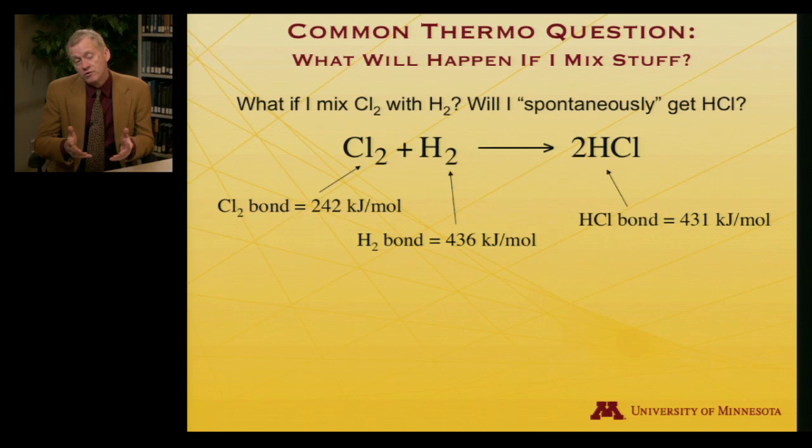And so one way to evaluate that, again using thermochemical concepts, would be to ask a question about bonding. We can determine the energies of bonds in molecules by tearing them apart, looking at how much energy it takes to tear them apart. It turns out that for molecular chlorine, the strength of the chlorine-chlorine bond is 242 kilojoules per mole. And for molecular hydrogen, it's a stronger bond, 436 kilojoules per mole. The hydrogen chloride bond is also quite strong, 431 kilojoules per mole.